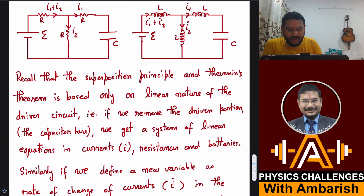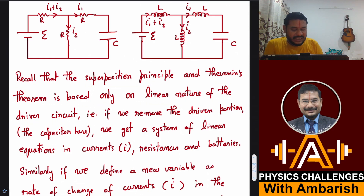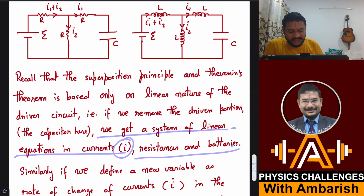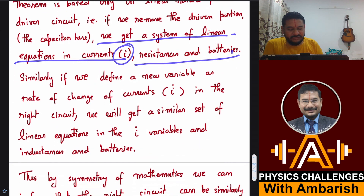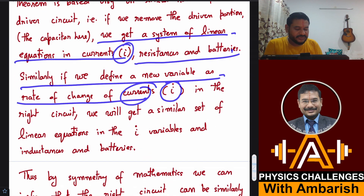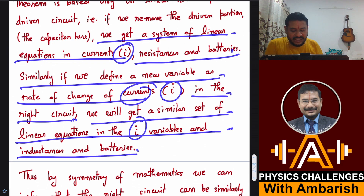Recall that Thevenin's theorem is based only on the linear nature of the driver circuit. If we remove the driven portion — the capacitor — we get a system of linear equations in current I, resistances, and batteries. Similarly, if we define a new variable as rate of change of current (İ), in the inductor circuit we will get a similar set of linear equations in İ, inductances, and battery.